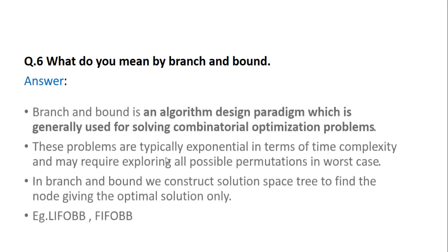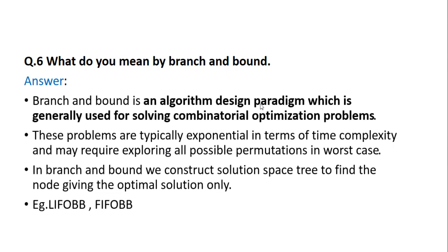Question 6: What do you mean by branch and bound? Branch and bound is an algorithm design paradigm which is generally used for solving combinatorial optimization problems. These problems are typically exponential in terms of time complexity and may require exploring all possible permutations in the worst case. In branch and bound, we consider the solution space to find the node with the optimal solution. There are two examples: LIFO branch and bound and FIFO branch and bound, using DFS and BFS strategies respectively.